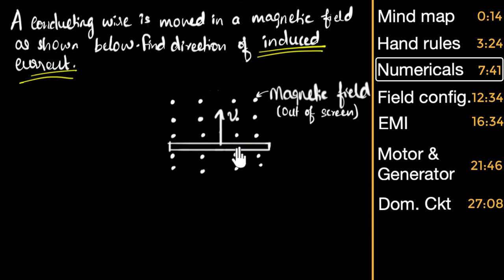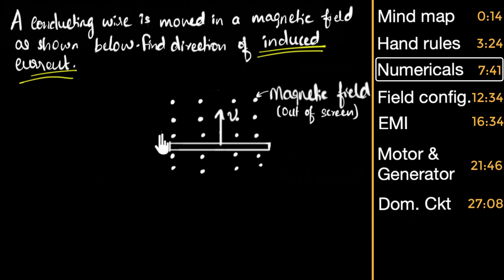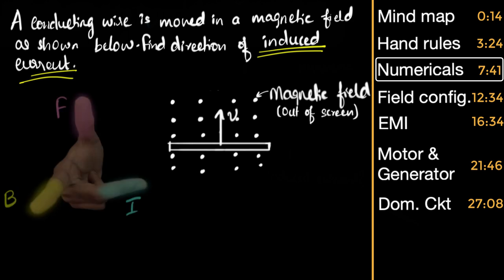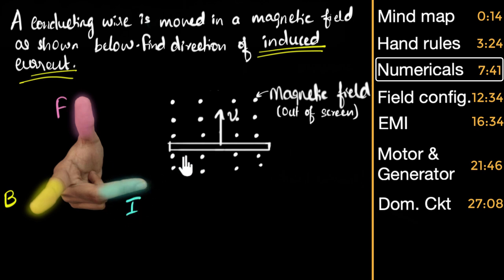I have to use my right hand generator rule such that the thumb is pointing upwards (the direction in which the wire is being moved; V stands for velocity). The magnetic field — the forefinger — is pointing out of the screen. So: thumb up, magnetic field pointing out. Orienting the hand that way, the middle finger, which represents the current, is pointing towards the right. So the current is going to be to the right.